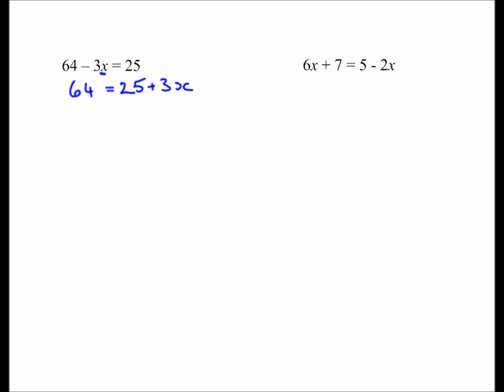I'm still aiming to get 3x on its own, so I need to get rid of the 25. To do that I'm going to subtract 25 from each side: 64 minus 25 gives me 39, and the plus 25 and minus 25 cancel on the right. Still trying to get x on its own, I need to get rid of the 3 — I'm going to divide by 3 — so x equals 13.